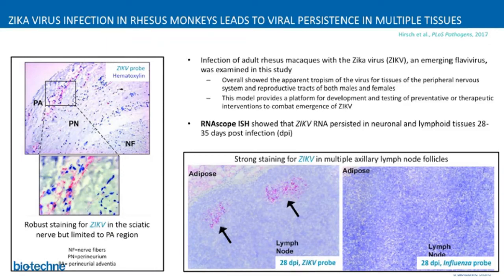Here is another example from Oregon Health and Science University, where researchers were studying Zika virus in adult rhesus monkeys. They showed the apparent tropism of the virus for tissues of the peripheral nervous system and reproductive tracts of both male and female. The model provides a platform for development and testing of preventative or therapeutic interventions. The RNA Scope ISH assay was used to detect Zika viral RNA that persisted in neuronal and lymphoid tissue 28 to 35 days post-infection, with strong staining seen in multiple axillary lymph node follicles 28 days post-infection.